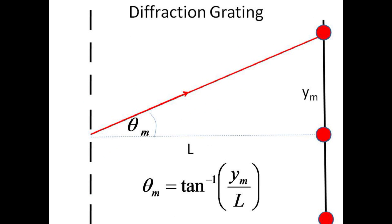No small angle approximations will work here, so we get the angle from the inverse tangent of the distance along the screen from the central bright spot, y, divided by the distance from the grating to the screen, L. Knowing y, L, and d allows us to determine the wavelength of the light, λ.